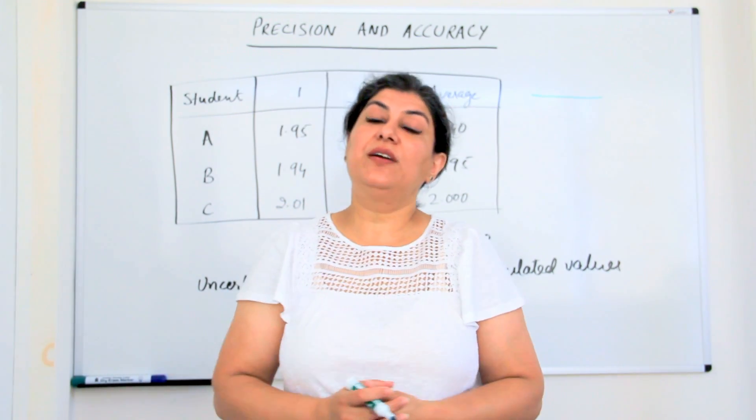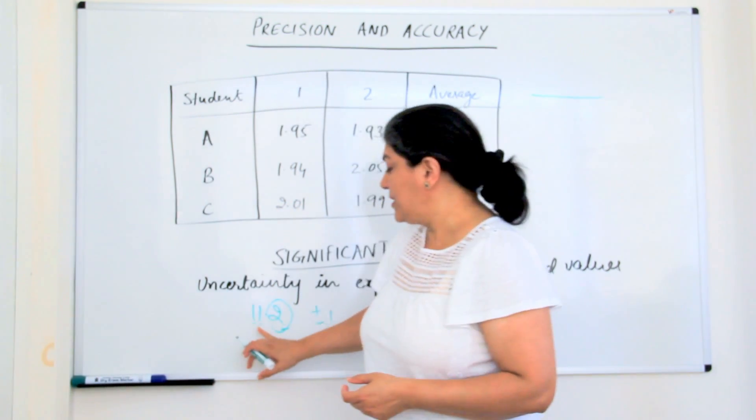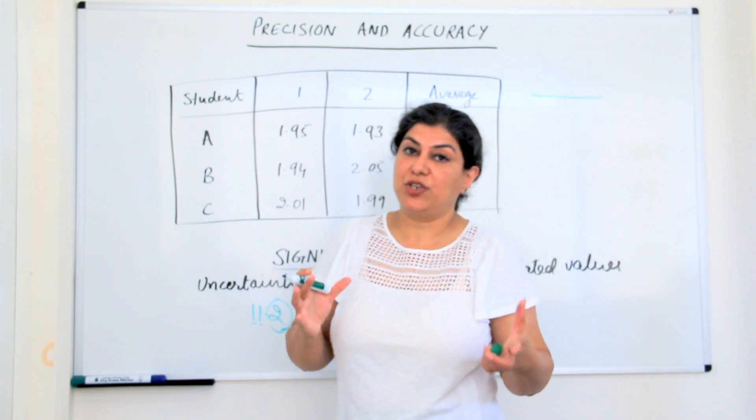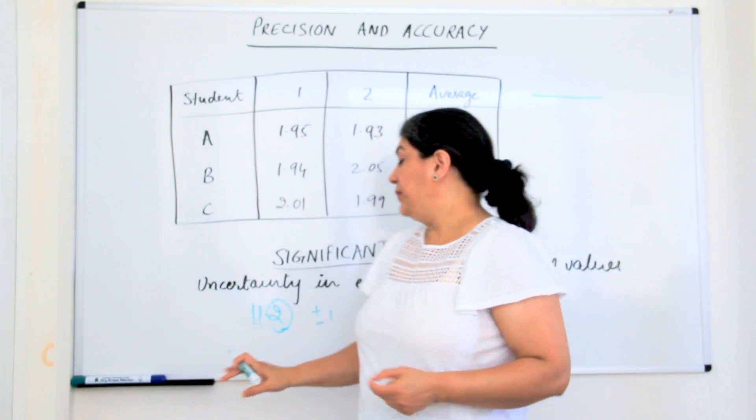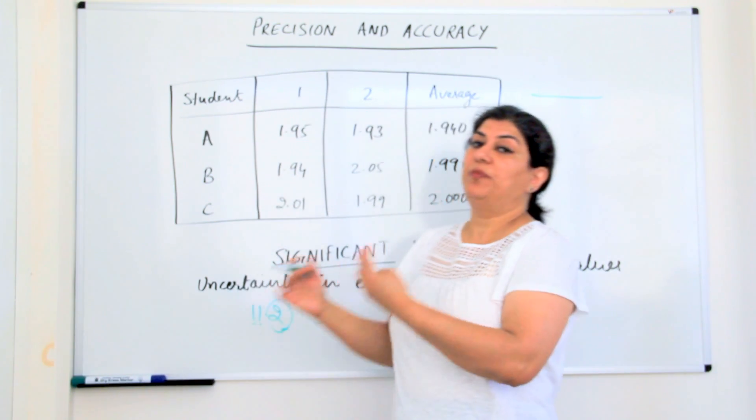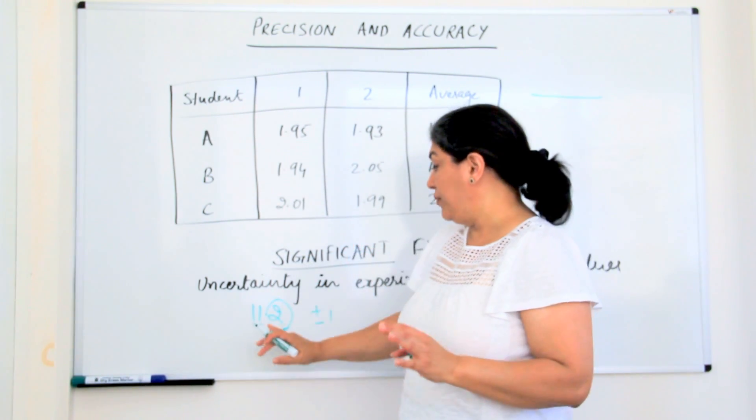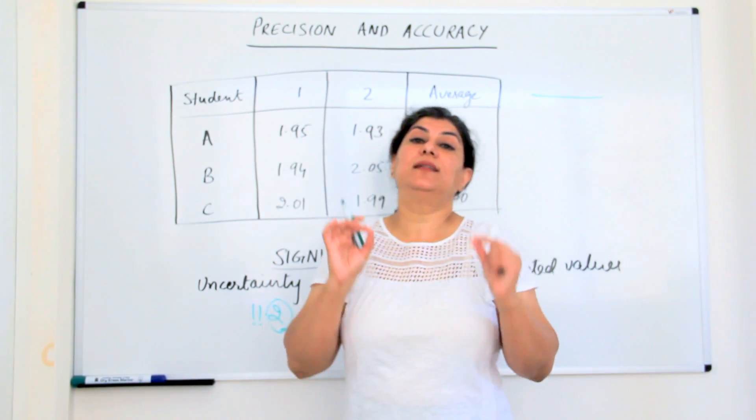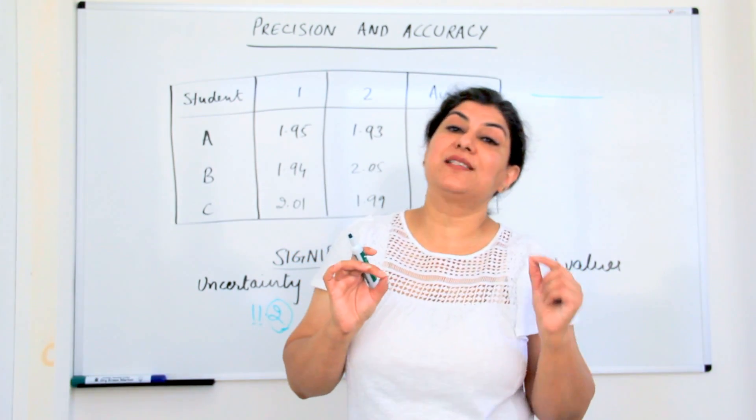We always have a scope of a plus minus 1 value for the last digit in whatever measurement we are taking. So significant figures give us an idea of the certain digits in any measurement and considering that the last digit of that measurement, whether it is after the decimal, before the decimal, whatever, it has the margin of error of plus minus 1.